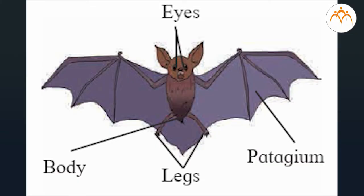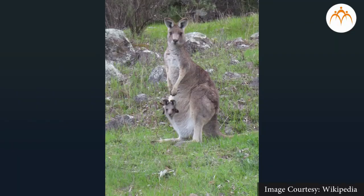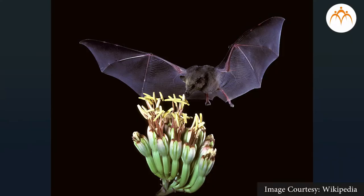Class Mammalia: the presence of mammary glands is the typical character of Mammalia. These animals are warm-blooded. The body is divided into head, neck, trunk, and tail. Digits are provided with nails, claws, or hooves. Exoskeleton is in the form of hairs or fur. Examples: elephant, human, kangaroo, dolphin, bat, etc.